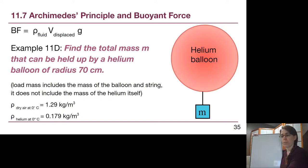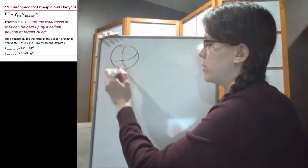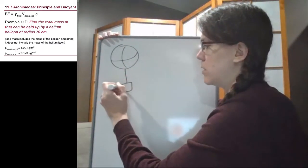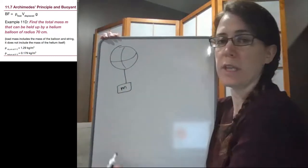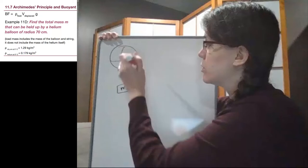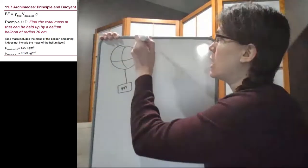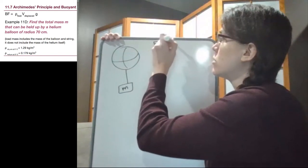The problem is going to start the way that all of our problems do with a picture: here's our balloon and here's our load mass. The key thing that we want to recognize is that with two separate objects we need two separate free body diagrams, so the free body diagram of the balloon.